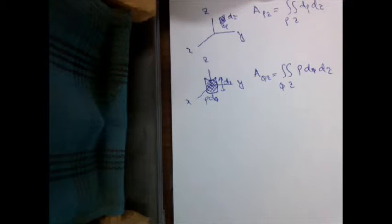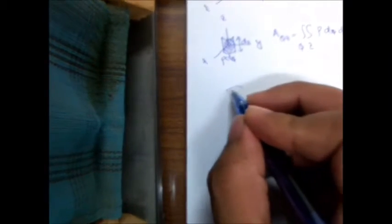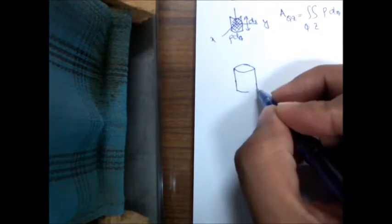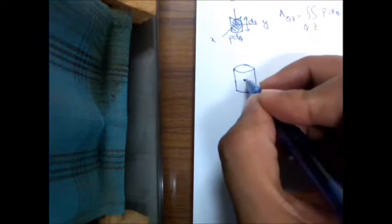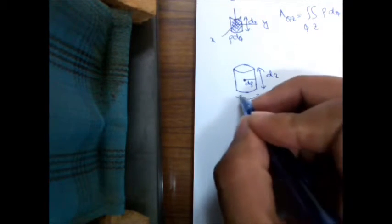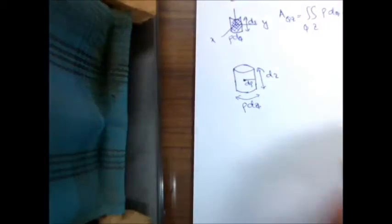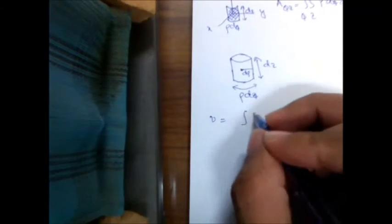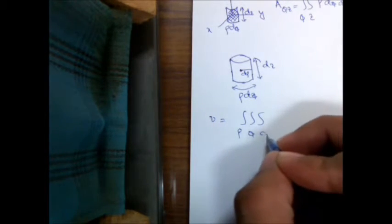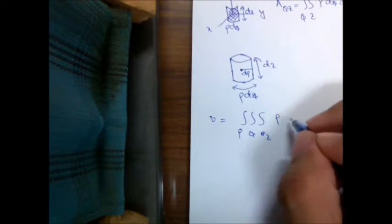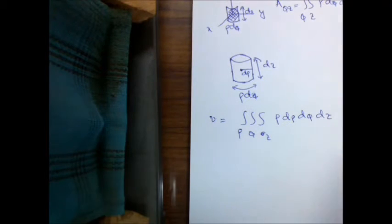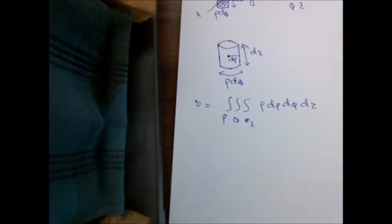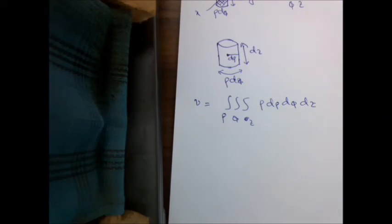Finally, to find the volume of a cylinder — similar to the volume of a cube in Cartesian coordinates — we can take a small volume element with d rho, dz, and rho d phi. The volume is simply calculated as the triple integral of rho d rho d phi dz over all the values of rho, phi, and z. This is how we can calculate the volume of a given piece of a cylinder. Thank you very much.